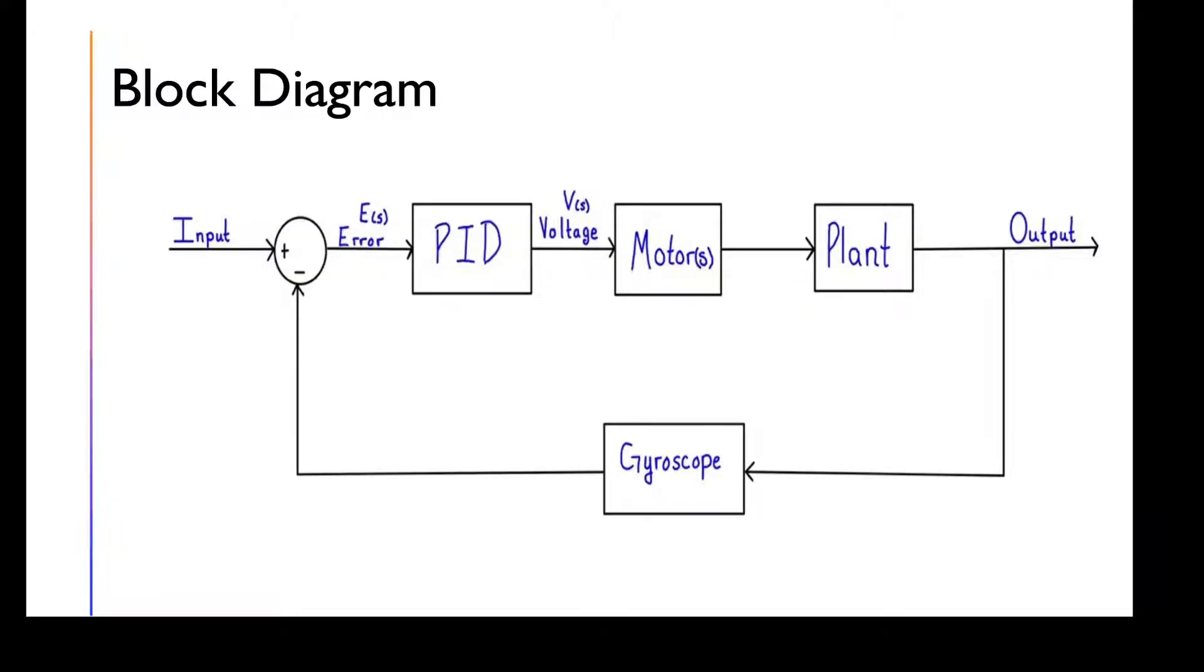Here we have the block diagram for the entire system of a Segway. On the left, we have the input, which is the desired angle at which we want the pendulum to sit. For this sake, we'll just use one, which goes into a summer connected to the feedback loop hooked up to the gyroscope.